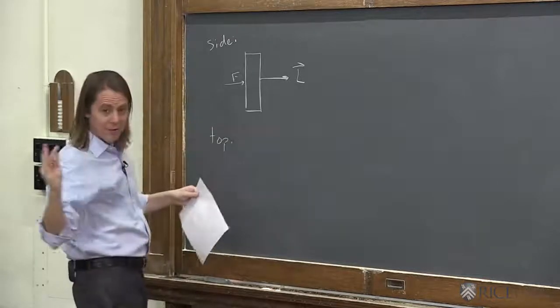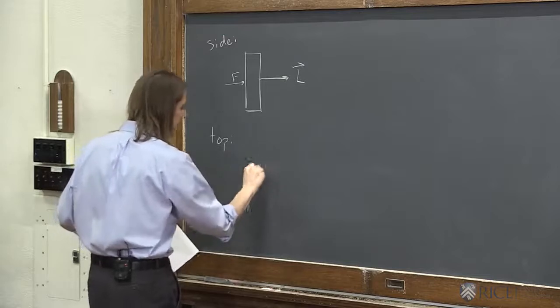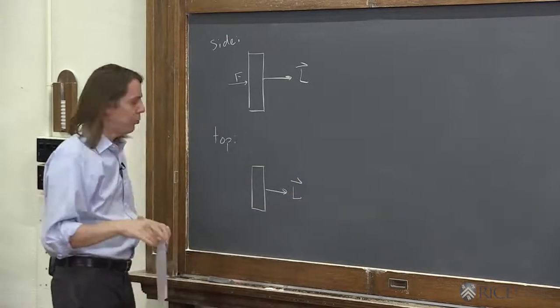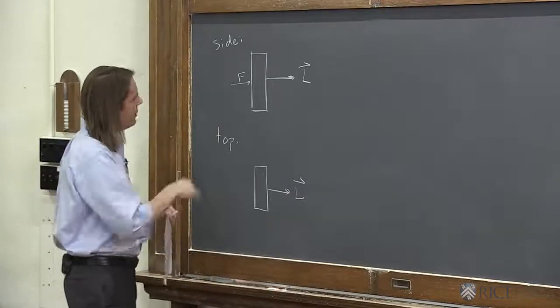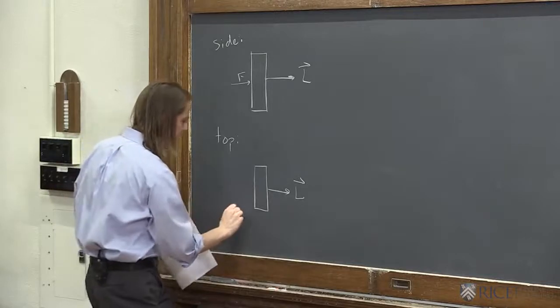So now instead of looking from the side of the table, look down on the table and again we'd say it looks like this. The L angular momentum is pointing at you, but I'm looking from the top. And then you could see better that I was applying a force from the side like this.